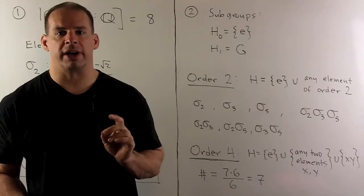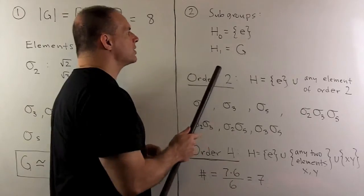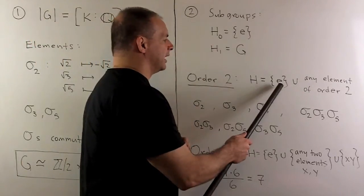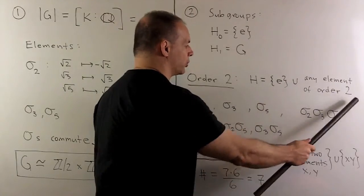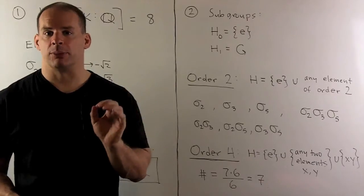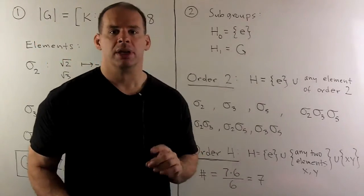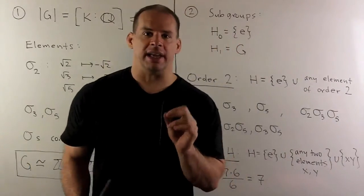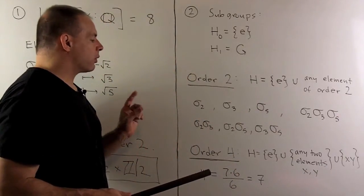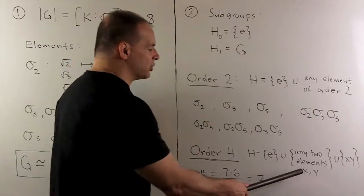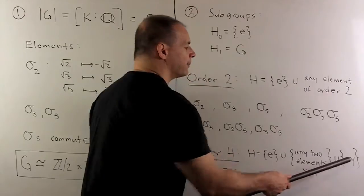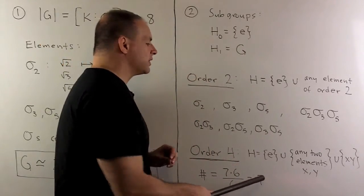Next, we find all subgroups of our Galois group. We have the easy ones: the identity subgroup and the group itself. For subgroups of order 2, we take the identity and throw in any other element, which has order 2, giving 7 choices — so 7 subgroups of order 2. For subgroups of order 4, we take the identity, choose any two non-identity elements x and y, and their product is forced. That gives 7 × 6 divided by 3! = 7 subgroups of order 4.